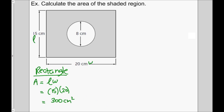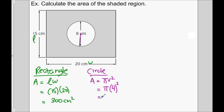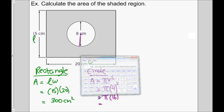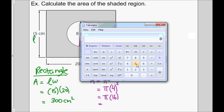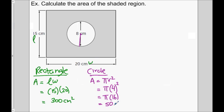Now let's find the area of the circle. The area of a circle is pi r squared. We'll keep pi as pi to be as precise as possible. The radius of the circle isn't 8, because that's the diameter — the radius goes from the middle to the edge, so it's 4 centimeters. So r equals 4, and 4 squared is 16. Pi times 16 gives us 50.27 square centimeters.